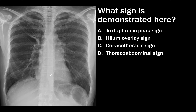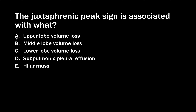Case 37. What sign is demonstrated here? The patient's minor fissure is pulled upward because of volume loss in their right upper lobe, and there is tenting of the right hemidiaphragm. This is called the juxtaphrenic peak sign. It is associated with upper lobe volume loss — not lower lobe volume loss. The juxtaphrenic peak occurs along the diaphragm but is specifically a sign of upper lobe volume loss.